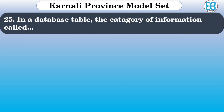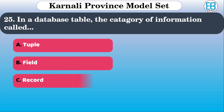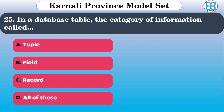In a database table, the category of information is called what? The options are: tuple, field, record, all of these. The correct option is field.